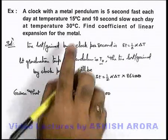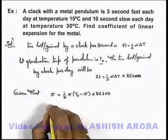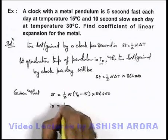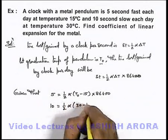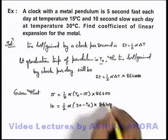And similarly on some other day when temperature is 30 degree centigrade it is 10 seconds slow. So we can write 10 is equal to half alpha times 30 minus T₀ multiplied by 86400.